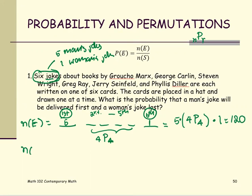And then the n of S, which is the number of the sample space. We have total six jokes, we select six, but one at a time. Put in the calculator.